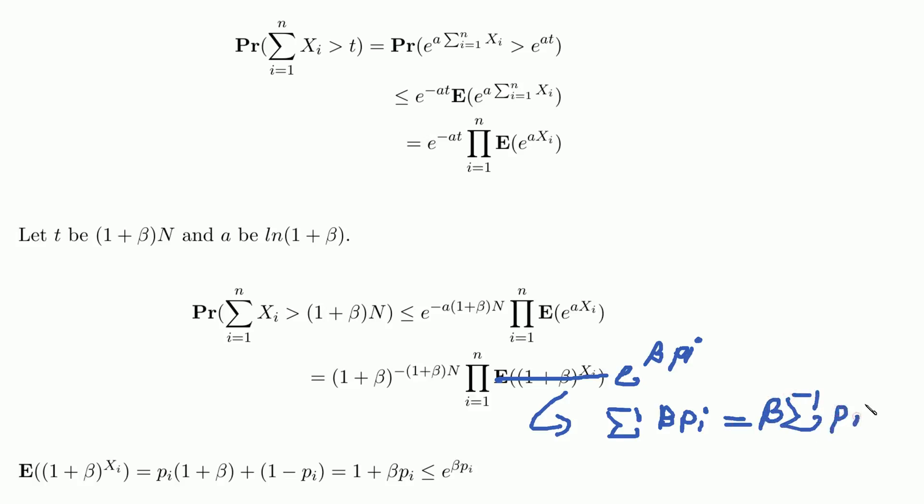And this we have seen before. This is just the expected value. So what we really got is beta times the expected value.